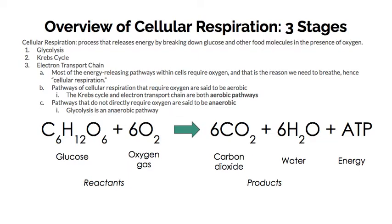Now we're going to go into the stages of cellular respiration — this is where the details get kind of complicated, so keep the big picture in mind. Cellular respiration happens in three stages: glycolysis, the Krebs cycle, and the electron transport chain. Most of the energy-releasing pathways within cells require oxygen, and that's the reason why we need to breathe — that's where we get the name cellular respiration. The pathways that require oxygen are said to be aerobic. The Krebs cycle and electron transport chain are both aerobic pathways. The pathways that do not directly require oxygen are said to be anaerobic, and glycolysis is the anaerobic pathway.